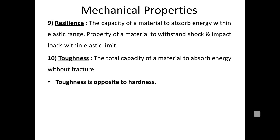Resilience is the capacity to absorb energy in the elastic range; hence it is useful in case of shock and impact loads. Toughness is the total energy absorbed before failure. Toughness and hardness are related but opposite: when a material is harder, the percentage of carbon is more and it becomes brittle. When we want a tougher material, it should be ductile. So toughness is opposite to hardness.